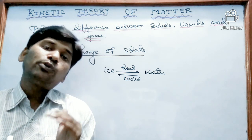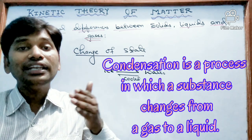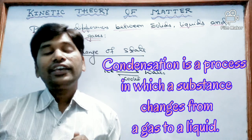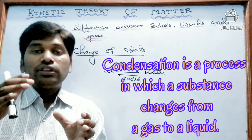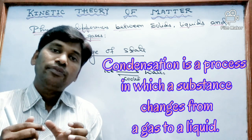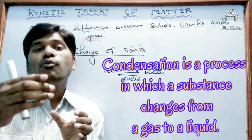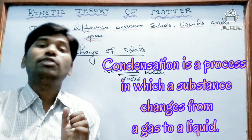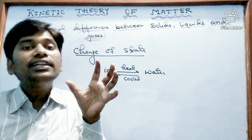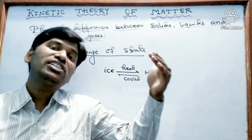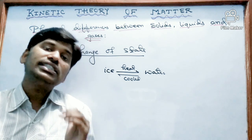Condensation is a process in which a gaseous state changes into the liquid state. For example, if we keep cool water in a glass, we will observe some water droplets at the outer surface of the glass. This is because the water vapor present in the atmosphere condensed — that is, converted from vapor state to liquid state — and collected on the surface of the glass. So this is condensation.